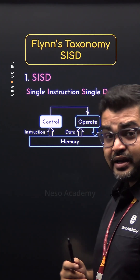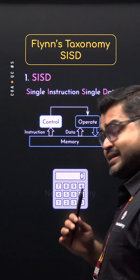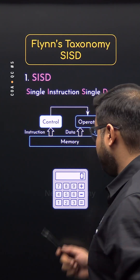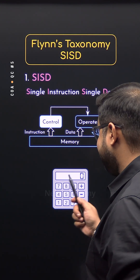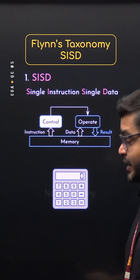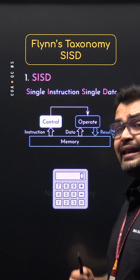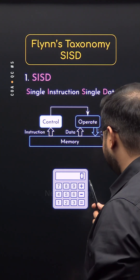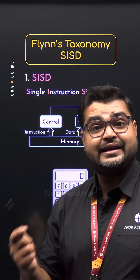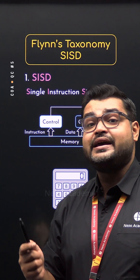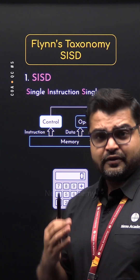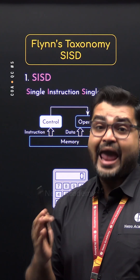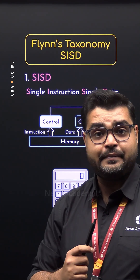It is similar to working with this calculator. Say we would like to perform 4 plus 7. We will press 4, then plus, then 7, and finally press the equals button. Here, the instruction is addition — that's why we pressed plus. And the single set of data is 4 and 7. If you notice, in this calculator, we cannot perform 5 plus 3 and 4 plus 7 at the same time.